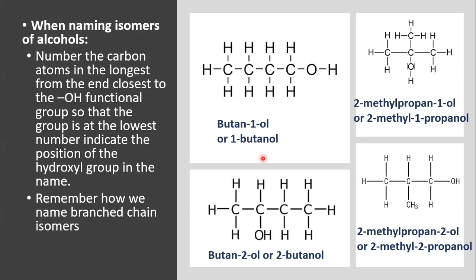Looking at a four-carbon example: four carbons means 'but-', and we see the OH group, so this is butanol. The OH group is on the first carbon, so we do not number from the other end and give it a higher number. The rule is that the functional group must have the lowest number.